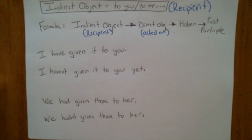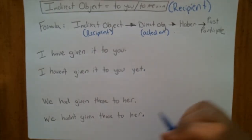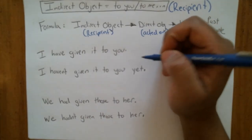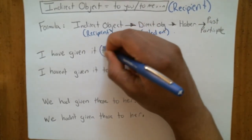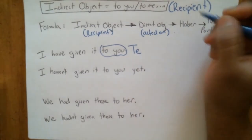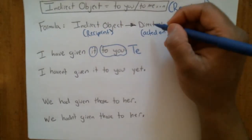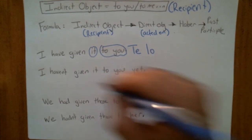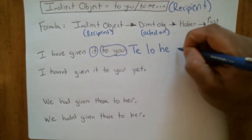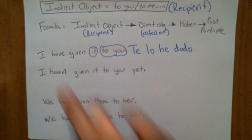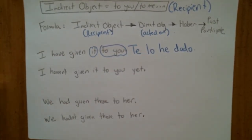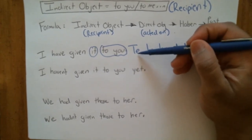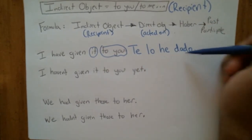When using indirect objects with the perfect tense, the order is: indirect object pronoun first (the recipient), then the direct object pronoun (the thing), then your haber + past participle statement. People go before things — put the who before the what. 'I had given it to you' — to you is te (indirect), it is lo (direct), then he dado from dar: te lo he dado — to you it I have given.